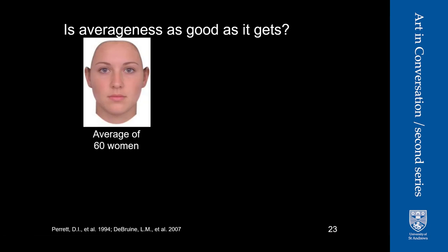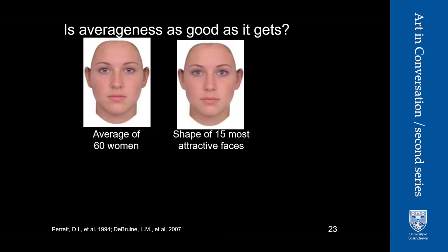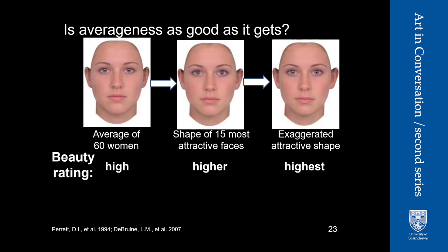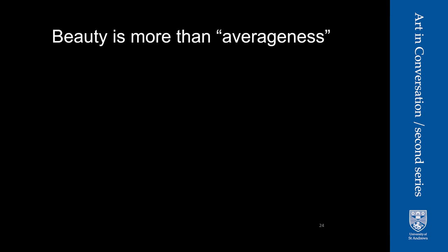I said earlier there was a theory that beauty is averageness, but I don't think that's entirely true. If you take the most attractive top quarter of 60 women and make a composite, it's subtly different from the overall average. Moreover, if you exaggerate that difference and give three images to raters asking them to rate attractiveness, the most exaggerated features receive the highest ratings. So there's a quality about attractiveness that differs from average. Despite all of that, I still haven't told you what attractiveness actually is — beauty is more than averageness.